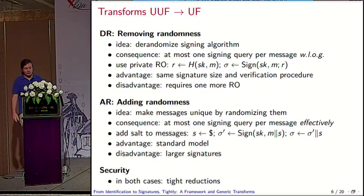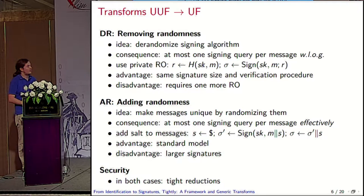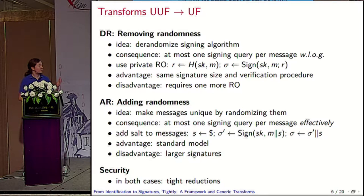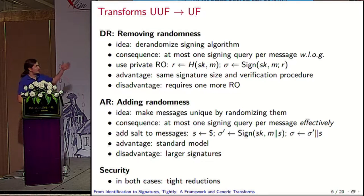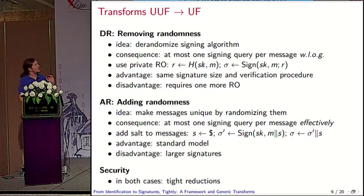An advantage of the DR transform is that the signatures stay the same in format and so does verification, since we just derandomize the signing algorithm. The disadvantage is that we need one more random oracle. The second technique is adding randomness: we add a salt to the message. Instead of signing a message, we pick a salt of 160 bits and concatenate it to the message and sign the whole thing. This effectively prevents signing the same message twice since if the salt does not repeat, M concatenated with the salt will always be different. The disadvantage is that the signature has the salt appended, costing another 160 bits. Importantly, in both cases we have tight reductions. From now on, UUF is our main goal in our transforms from identification schemes.